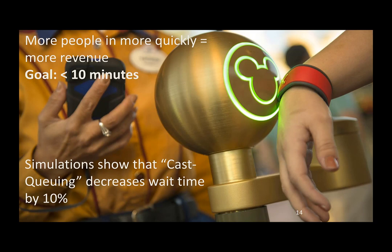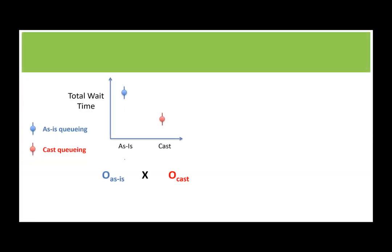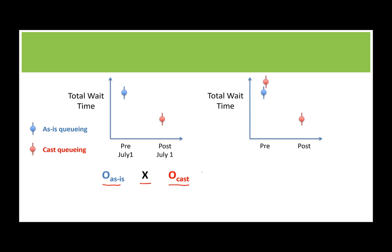So let's go back to the Disney example about reducing the time it takes for people to get into the park. Here's the experiment as we had it before — we collected data beforehand when we didn't have the new queuing, we did something, we added the CAS queuing system, and then we measured it afterwards. I'm going to add some different terminology here, calling this 'pre' when it was the as-is, and then 'post' which was when it was CAS queuing. Now let's think about a different way to run this experiment to mitigate some of the problems, such as maybe there was bad PR for Disney between the pre-period and post-period, or maybe the competition happened to open a big new ride, so there were shorter lines in general at Disney.